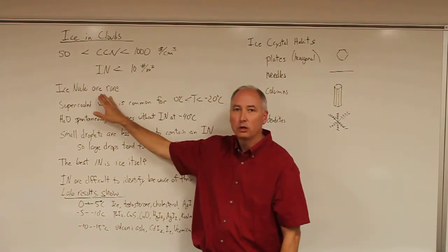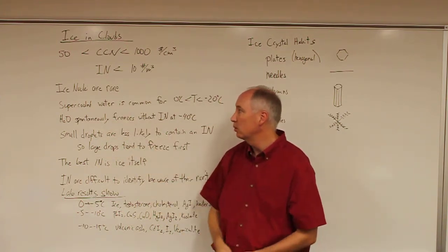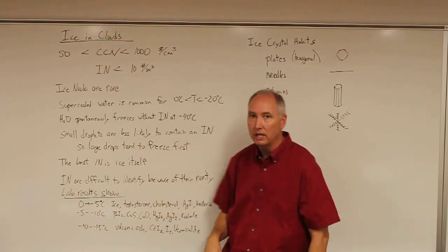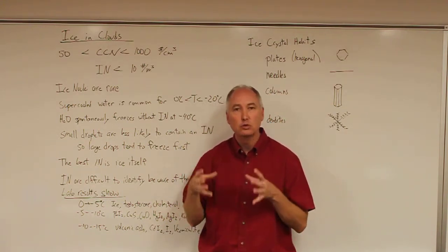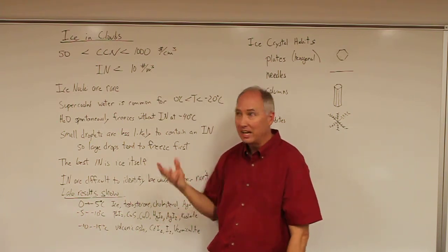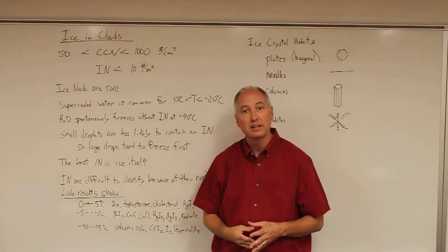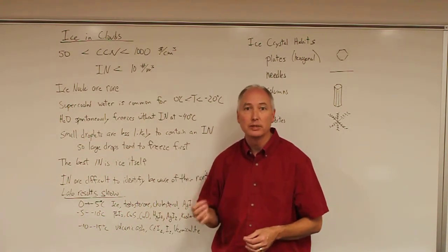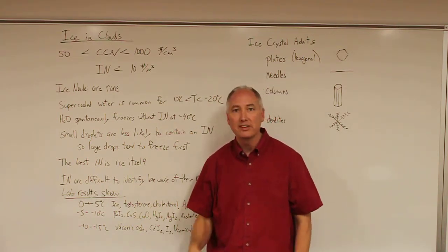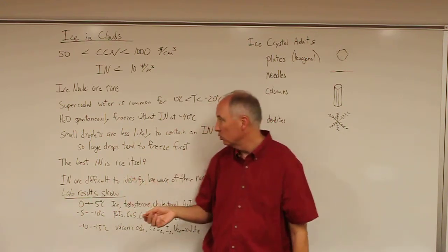Because ice nuclei are rare, there are certain things observed in the atmosphere. First, supercooled water is common at temperatures all the way down to -20°C. This just means that in a given cloud droplet, there's not a good ice nuclei. We also know that water will spontaneously freeze at -40°C. There's no ice nuclei required at -40°C,